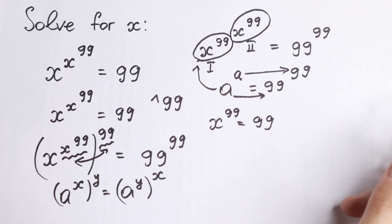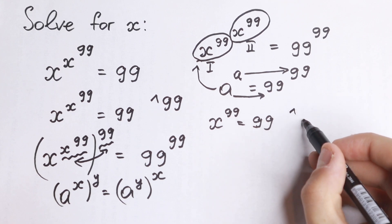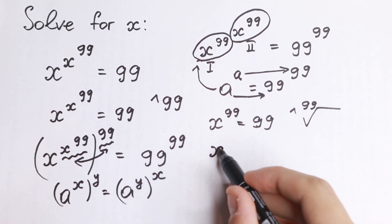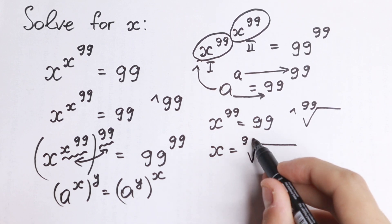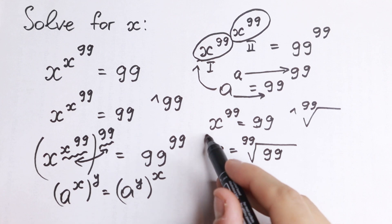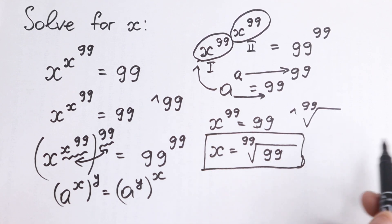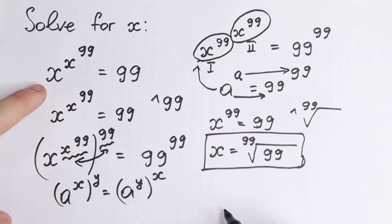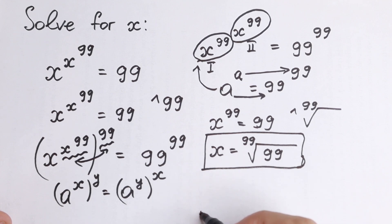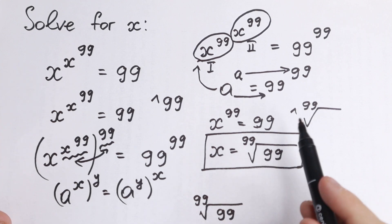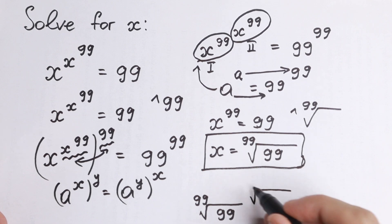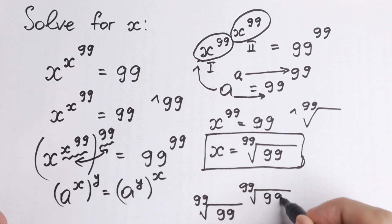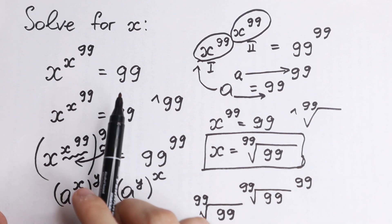We can easily find x. If we take the 99th root from both sides, we get x equals the 99th root of 99. Now let's check this root. We substitute x equals the 99th root of 99, and raise it to the power of the 99th root of 99, then all raised to the power 99, and it needs to equal 99.